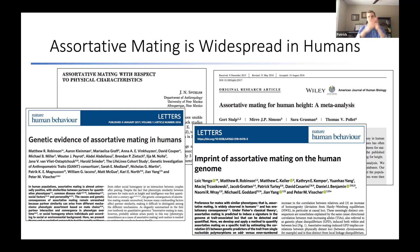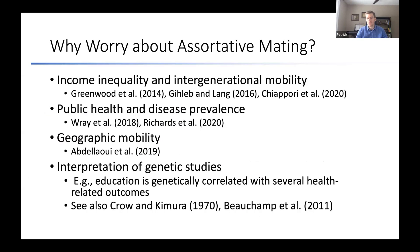There's been a lot of work done on assortative mating in general. It's widespread in humans across a bunch of different traits. The main question is: why should we worry about this? Assortative mating has implications for income inequality and intergenerational mobility. If people sort on SES-related outcomes, that could affect how wealth is distributed through society, and that might have implications for health. It also has effects on public health and disease prevalence — if people are sorting on traits that cause disease, you may see an increase in certain types of diseases.